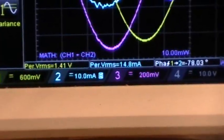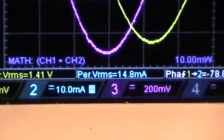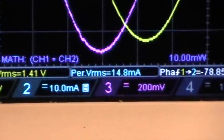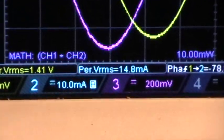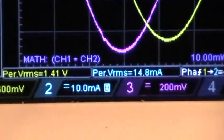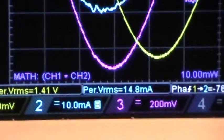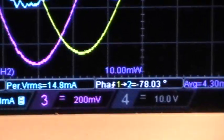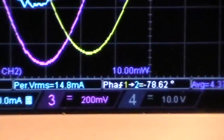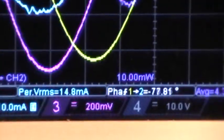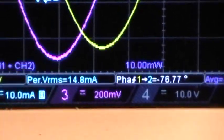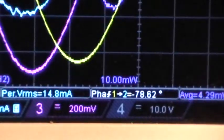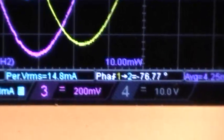The period RMS of the channel 2, the input current, is 14.8 milliamps RMS or 0.0148 amps RMS. The phase difference between 1 and 2, current and voltage, or rather voltage and current, is fluctuating but it's between minus 77 and minus 81 degrees.